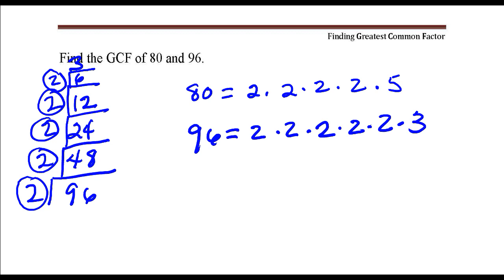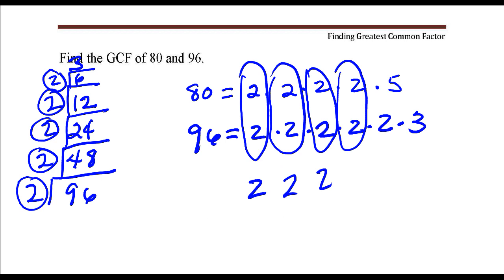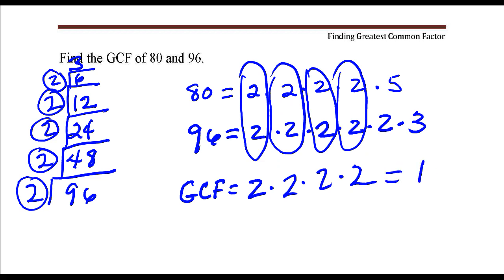The greatest common factor is just going to be the product of all common factors. These 2s are common, here's another set of 2s that are common, and another one, and another one — that's the last one that's common. So the greatest common factor is the product of those common factors, and in this case the greatest common factor is 16.